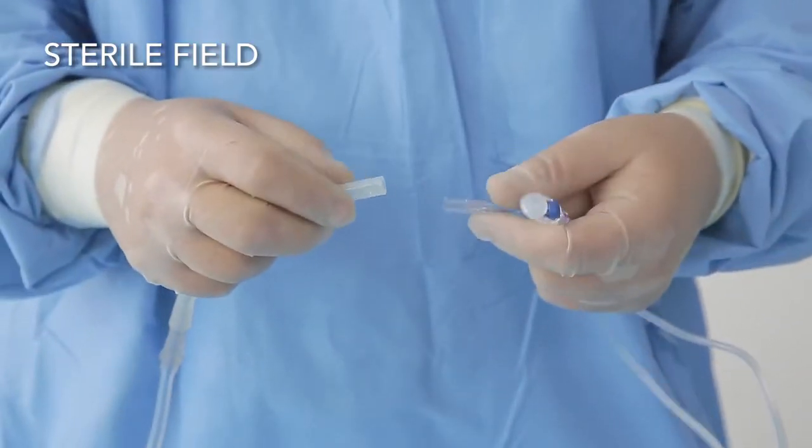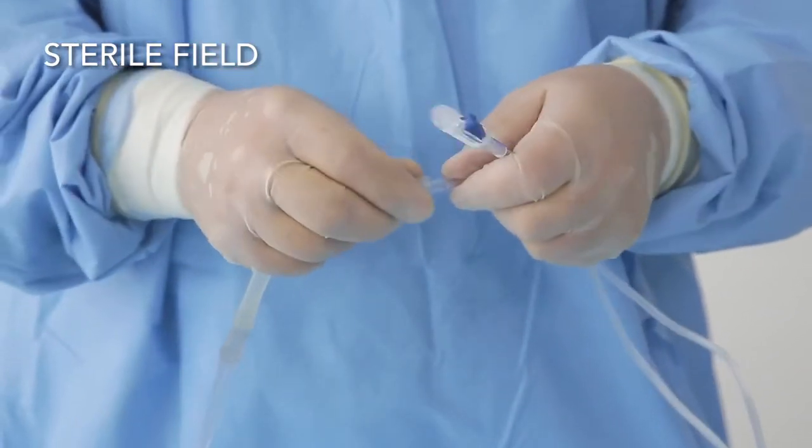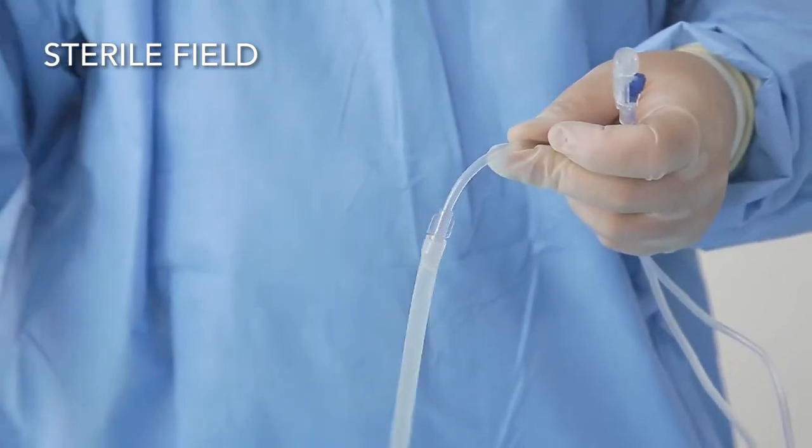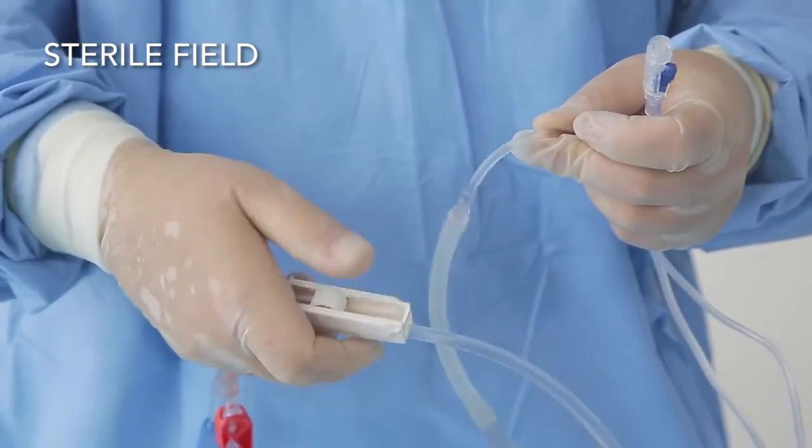The sterile assistant or urologist now attaches the water source to the female luer lock connector and opens the roller clamp for water to flow.